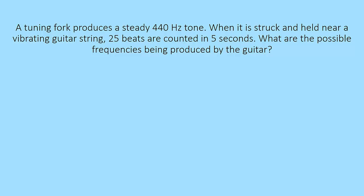Let's start with a beat frequency problem. A tuning fork produces a steady 440 hertz tone when it is struck and held near a vibrating guitar string. 25 beats are counted in 5 seconds. What are the possible frequencies being produced by the guitar? We have to keep in mind that the beat frequency is what we hear as a result of these two tones interacting. In this particular case it comes from 25 beats in 5 seconds. So the beat frequency is 25 over 5 or 5 hertz.